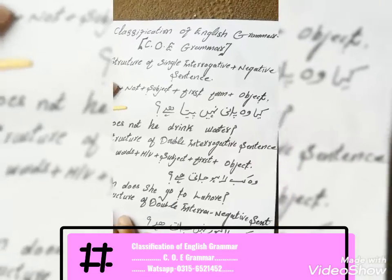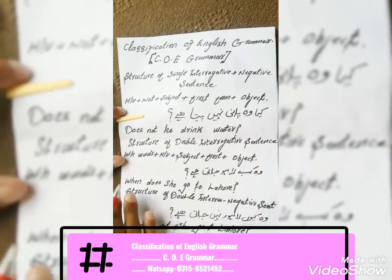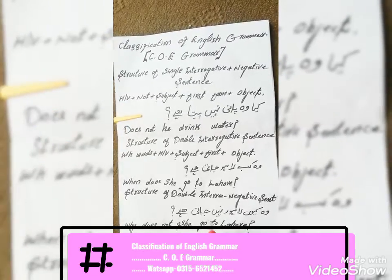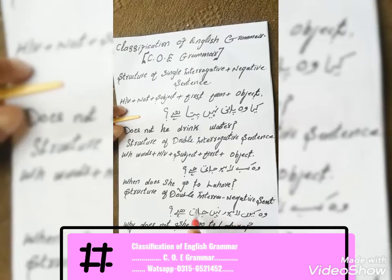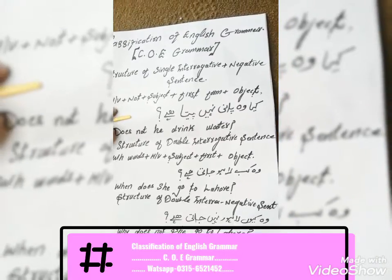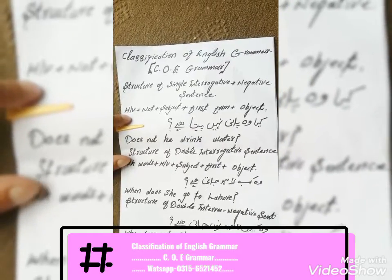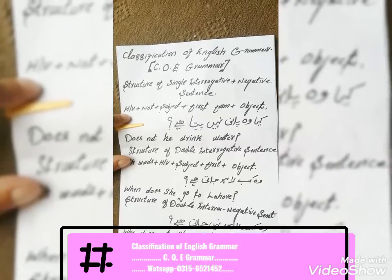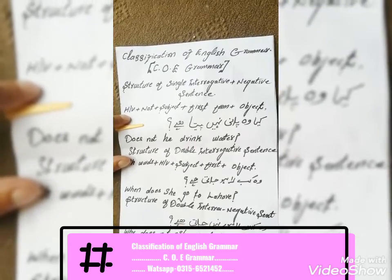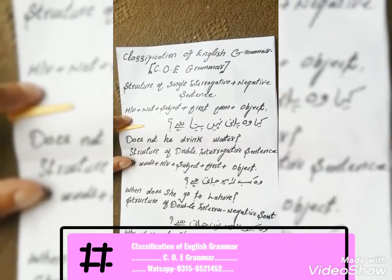Structure number six: structure of a double interrogative-negative sentence, which combines interrogative and negative. For example: 'Why does she not go to Lahore?' Here, 'why' is the WH-word, 'does not' carries the negative sign of interrogation, 'she' is the subject, 'go' is the first form of the verb, 'to' is a preposition, and 'Lahore' is the object.